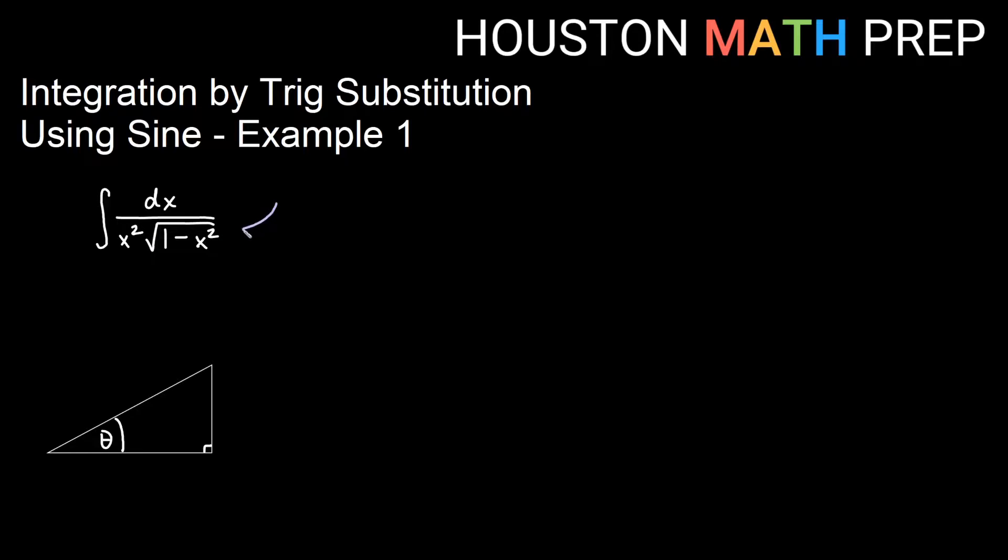When you look at this problem, first thing is that you might see you have an expression that looks something like a squared minus u squared. Since that is the case, and I can't do this by a normal u substitution, then this would be trig substitution for sine when we have a squared minus u squared.